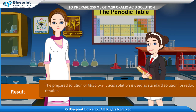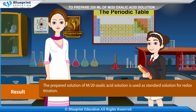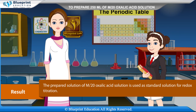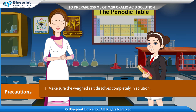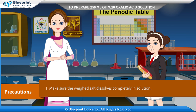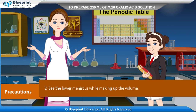Result: The prepared M/20 oxalic acid solution is used as a standard solution for redox titration. Precautions: Make sure the weighed salt dissolves completely in solution. See the lower meniscus while making up the volume.